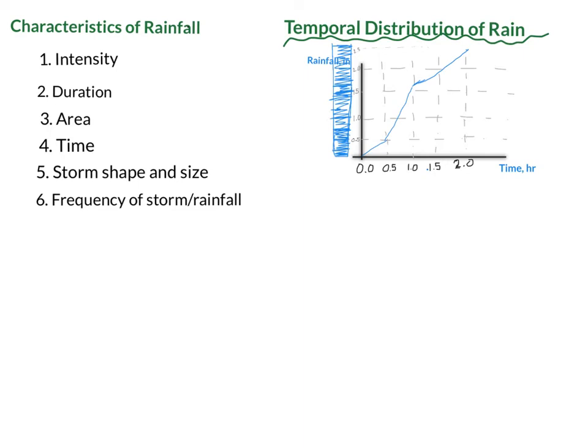So it's really important to note here is that rainfall intensity in a single event, a single storm, can vary and usually does vary over time in a single event.